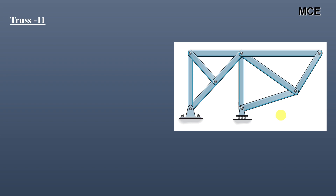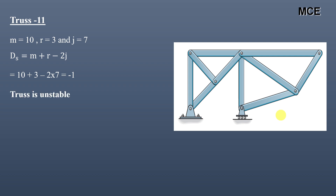For truss eleven, this truss has a total of 10 members, 3 reactions, and 7 joints. The value of ds equals −1. Since ds is less than zero, this truss is unstable, and we don't need to find internal or external static indeterminacy because we cannot solve an unstable structure.